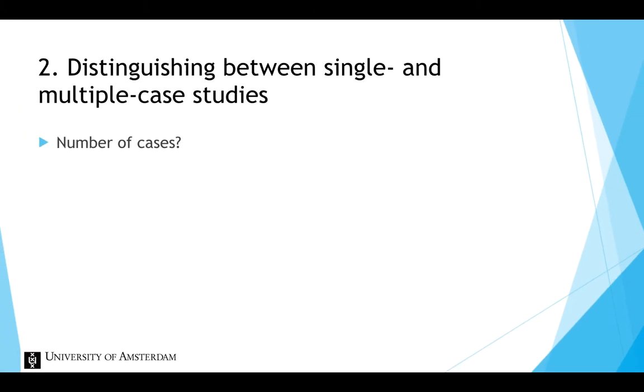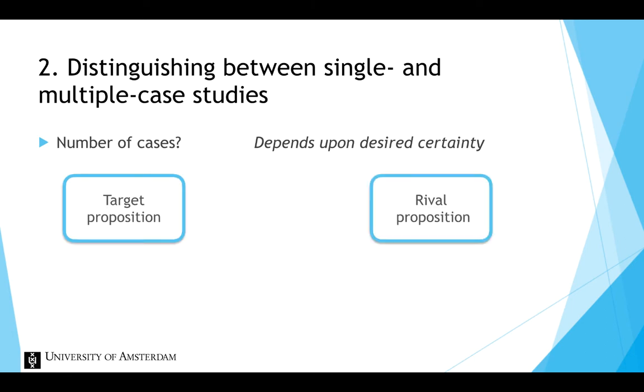A further question you can encounter when doing a multiple case study has to do with the number of cases. This selection should depend upon the certainty you want to have. If your target theoretical proposition and rival proposition differ to a great extent, you may only need three or four cases to reach a high degree of certainty.